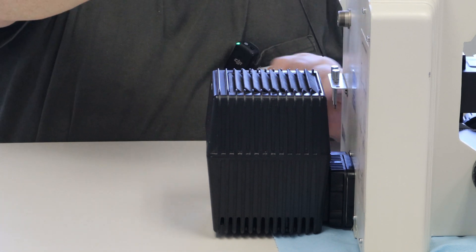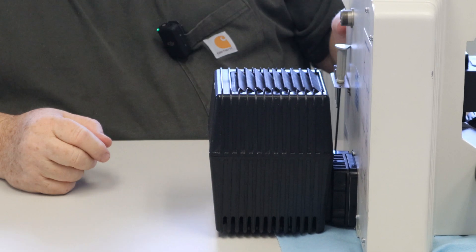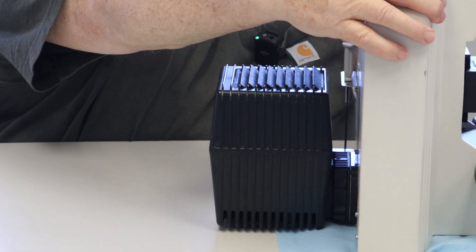And now you have successfully changed the light bulb on your E600 Nikon microscope.